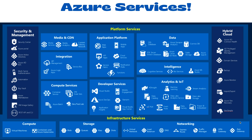Azure provides basically three kinds of services: Software as a Service, Platform as a Service, and Infrastructure as a Service. In the platform as a service category, there are services like media and CDN, integration, compute services, application platform, developer services, intelligence, analytics, IoT, and data. In infrastructure services, for compute you have virtual machines, containers, and Azure Kubernetes; for storage you have blobs, queues, files, and disks; and for networking you have virtual network, load balancer, DNS, ExpressRoute, traffic manager, VPN gateway, and app gateway. We will discuss everything in our upcoming videos.